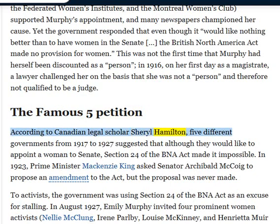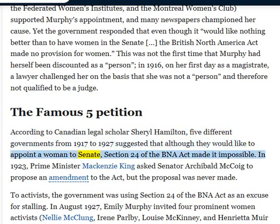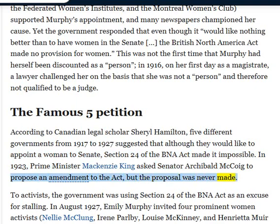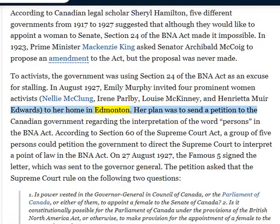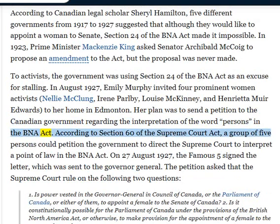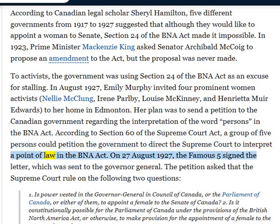According to Canadian legal scholar Cheryl Hamilton, five different governments from 1917 to 1927 suggested that although they would like to appoint a woman to the Senate, Section 24 of the BNA Act made it impossible. In 1923, Prime Minister Mackenzie King asked Senator Archibald McCoy to propose an amendment to the Act, but the proposal was never made. To activists, the government was using Section 24 of the BNA Act as an excuse for stalling. In August 1927, Emily Murphy invited four prominent women activists — Nellie McClung, Irene Parlby, Louise McKinney, and Henrietta Muir Edwards — to her home in Edmonton, planning to send a petition regarding the interpretation of the word persons in the BNA Act. According to Section 60 of the Supreme Court Act, a group of five persons could petition the government to direct the Supreme Court to interpret a point of law in the BNA Act.